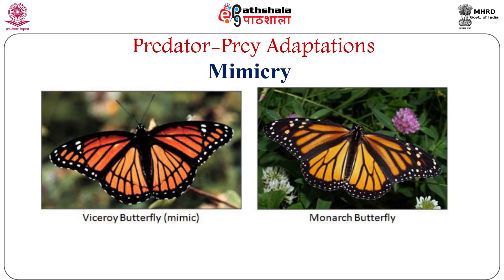In mimicry, a species resembles the superficial appearance of another species. Batesian mimicry is when a non-toxic species, the mimic, resembles a toxic species, the model, and is avoided by predators due to its resemblance to the toxic model. For example, the harmless Viceroy butterfly mimics the poisonous Monarch butterfly. The other type is Müllerian mimicry, in which one toxic species resembles another toxic species and both are avoided by predators. Evolution of surface features like thorns, spines, and hard shells also protect prey from predation. Predators also follow tactics such as camouflage, releasing poisonous chemicals, and forming webs or traps.